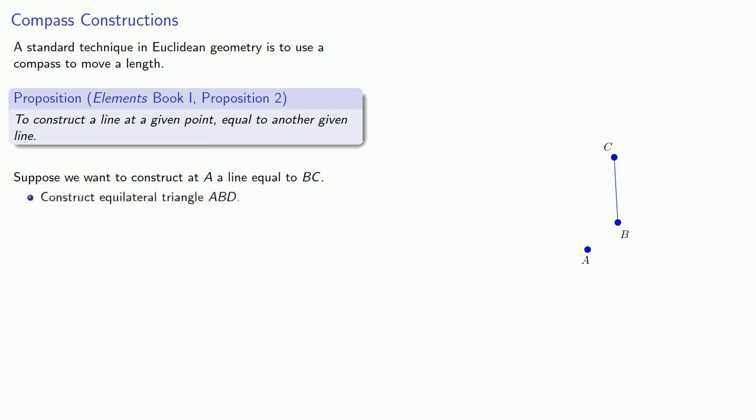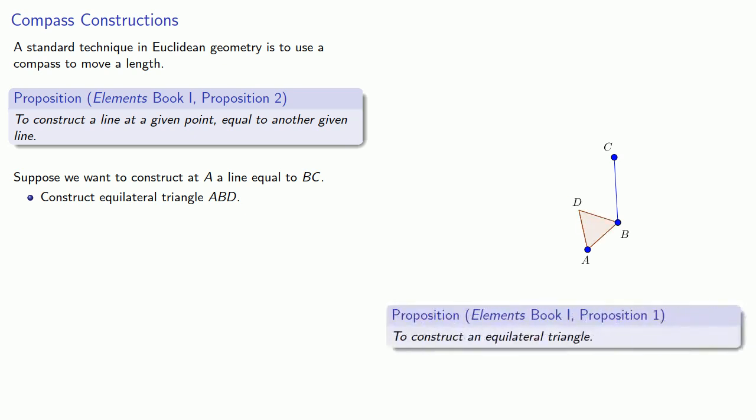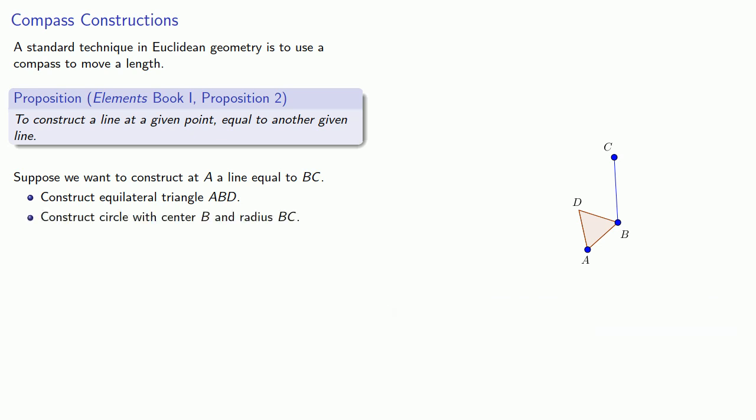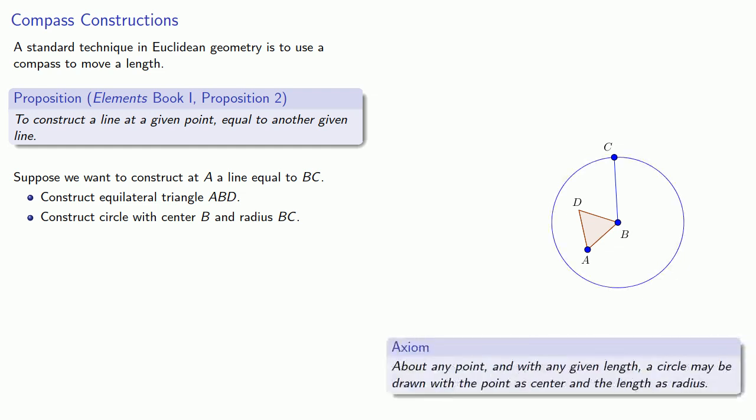And here's Euclid's construction. Suppose we want to construct at A a line equal to BC. So first, we'll construct an equilateral triangle ABD. And we know we can do that because of the first proposition. Next, we'll construct a circle with center B and radius BC. And again, we know we can do that because of our axioms.